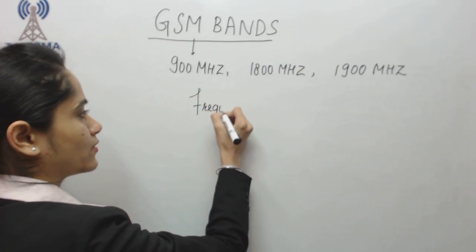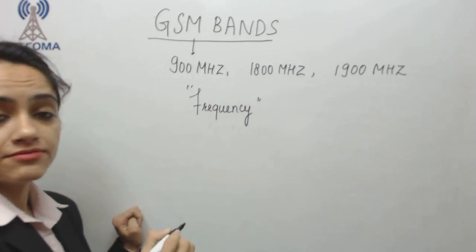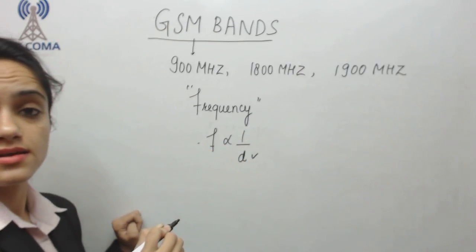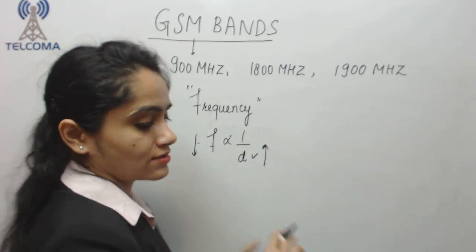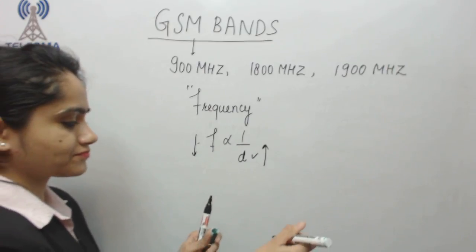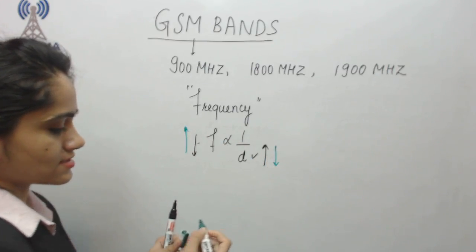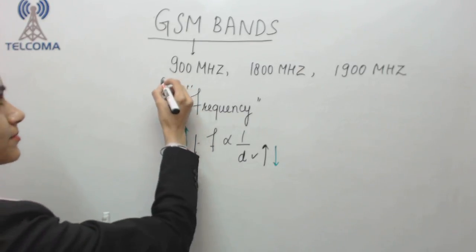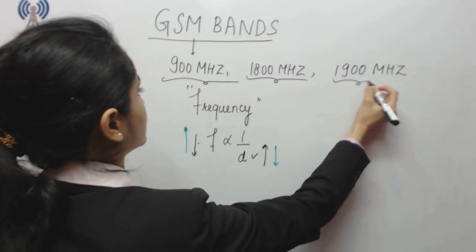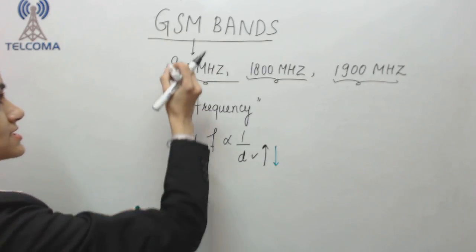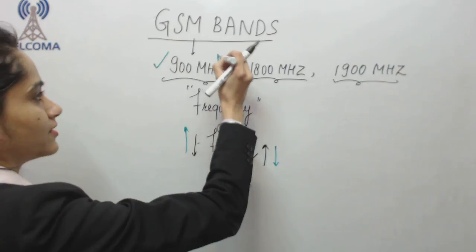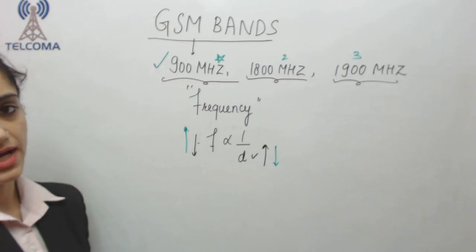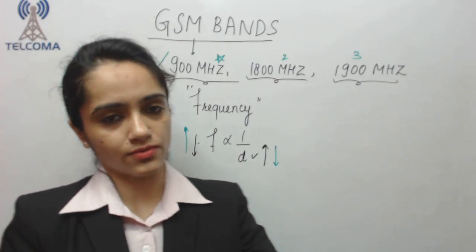For radio communication we require frequency. There is a relationship between frequency and distance: frequency is inversely proportional to distance. So if you have lesser frequency, the greater the distance it will cover, and if you have more frequency, the distance covered will be less. As per the standards, GSM has these three bands available. Lesser frequency means more distance covered, so the 900 MHz band will be preferred most.